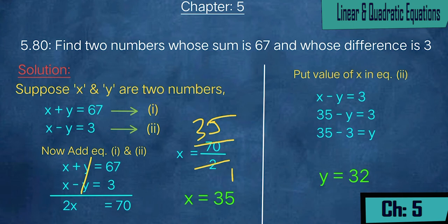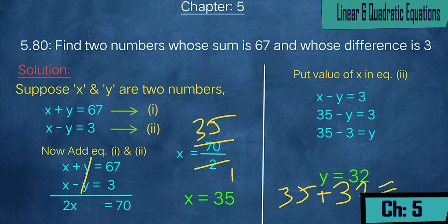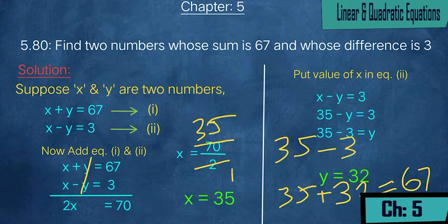We can verify: 35 + 32 = 67 (the sum is correct) and 35 - 32 = 3 (the difference is correct). We have proved the situation given in the question.